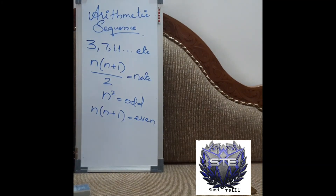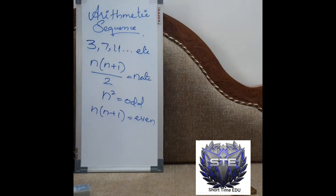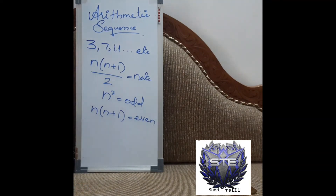If the question is to find the sum of the first 10 even numbers, we use n into n plus 1: that is 10 into 11, which equals 110. So the sum of the first 10 even numbers is 110. These are the three key sum formulas: natural numbers, odd numbers, and even numbers.